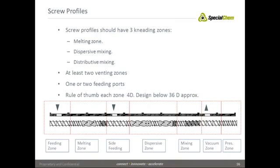For each function in our machine we need at least four diameters. For instance, if we have to increase the venting capacity of our machine by adding a venting port here, we will need to add a barrel of four diameters, increasing the length of the extruder to 40 diameters. If we need to add another side-fitting port — for instance, after the venting zone — that is another four diameters and we will have 44 diameters length. So this is the rule of thumb: the more things that you want to do with your machine, the longer it needs to be.